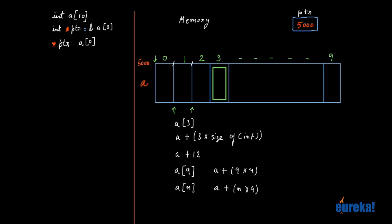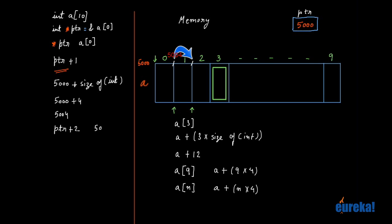So saying *ptr gives us A[0]. Now let's look at ptr plus 1. ptr by itself is just the address, which is 5000. When I add 1 to 5000, you might expect 5001, but that is not what happens with pointer arithmetic. In pointer arithmetic, every time you increment, the address increments by the size of the type it's pointing to. Since ptr is of type int*, adding 1 actually increments by 4. So ptr plus 1 is address 5004. If I add 2 to ptr, it becomes 5008.